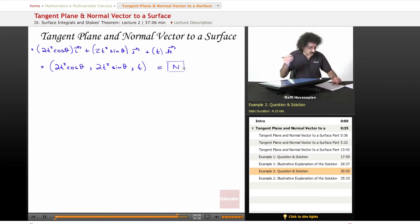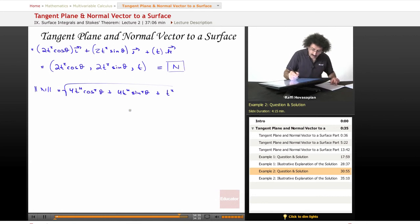Now if I want to take the norm, well, not a problem. Square of this, square of this, square of this, all under the square root sign, you end up with 4t⁴ cosine² theta plus 4t⁴ sine² theta. And we like it when we see sine squared and cosine squared because that's going to equal 1 plus t squared.